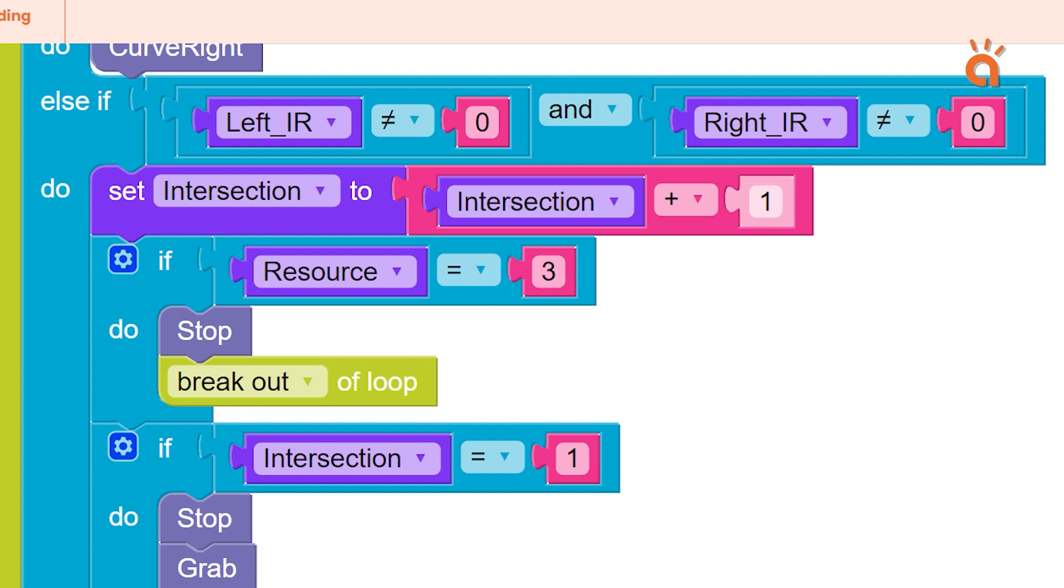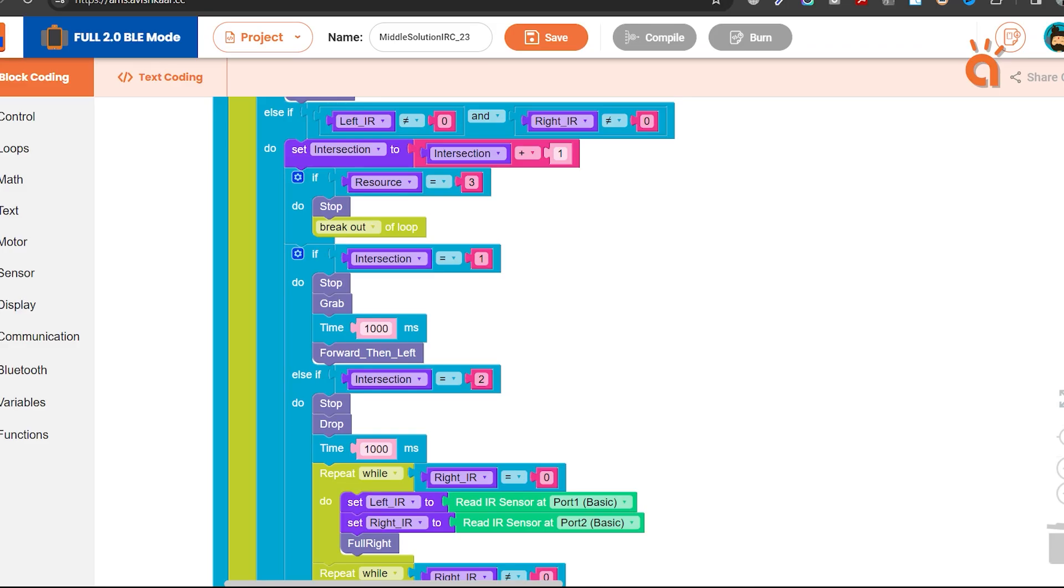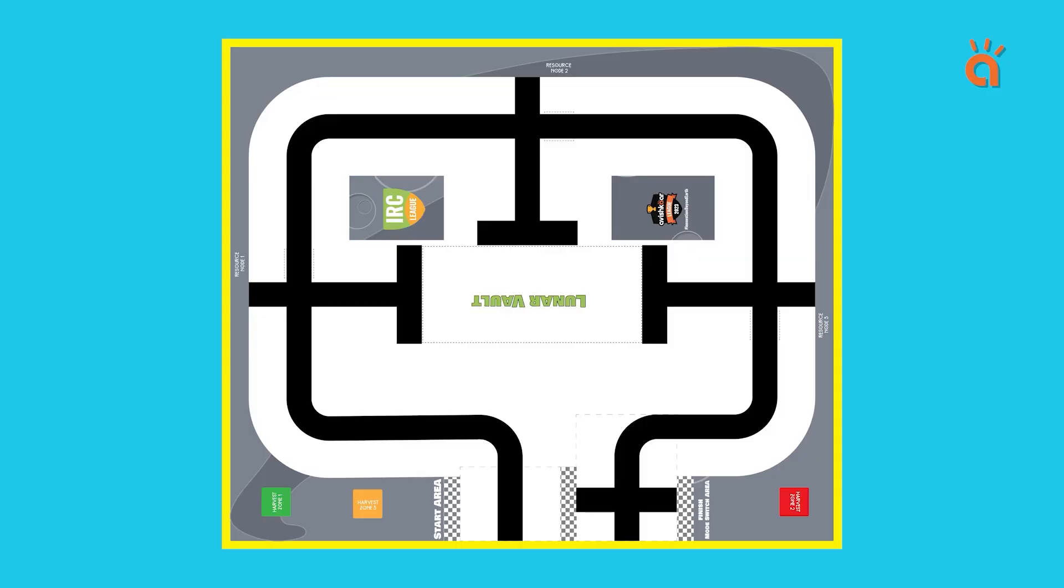Here, the sequence of blocks is important. We will use this condition in the beginning before other conditions. This will allow the robot to check through this condition first and then move ahead if the condition is false. When the robot reaches first three black intersection, the count of resource variable was 0, 1 and 2. But on the last black intersection, the resource count was 3 and hence the condition will be true and the robot will be stopped.